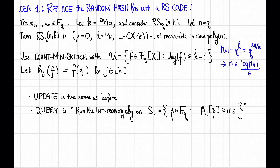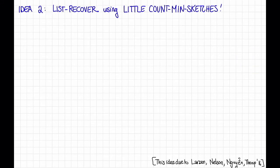If you do work out the parameters, you'll find they are a little bit worse than the original count min sketch, but we've gained two things. First, it's a deterministic scheme instead of randomized — that's pretty cool. And second, we have an efficient, meaning polynomial in n, time algorithm to do the querying, that is to find all of the heavy hitters. So that's the first idea. Let's move on to the second idea, which also uses list recovery of Reed-Solomon codes to speed up query time for count min sketch, but it's a different approach.